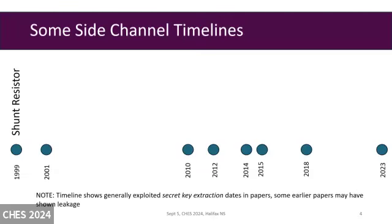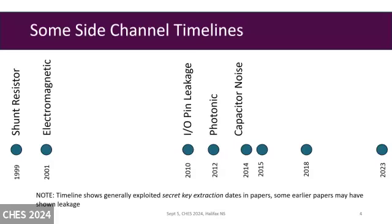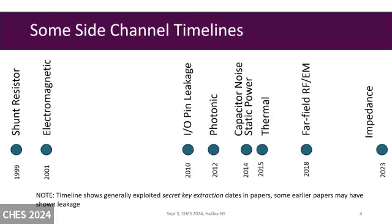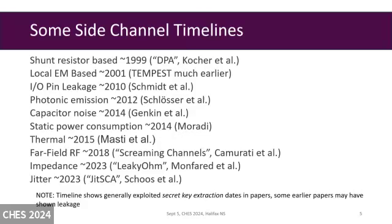Some quick side channel timelines: shunt resistors in 1999, EM probes in 2001, IO pin leakage, photonic emission, noise of capacitors, static power analysis, thermal leakage, near-field RF and EM, impedance measurement, and jitter measurement. There are now 20-plus years of different side channels, and it was quite amazing that new techniques are still coming out. JIT SCA showed that you could have jitter on one device transmitted over a galvanic isolator to a receiving device. The jitter is inherently coupled into your devices because if you have a device running crypto off the same power rail as any digital signal, you end up with jitter coupling onto that signal from variations in the power supply.